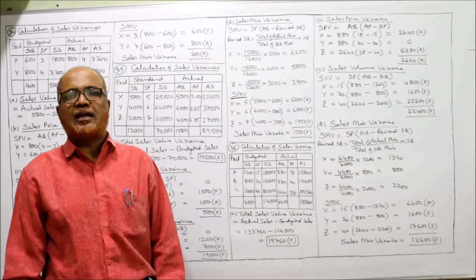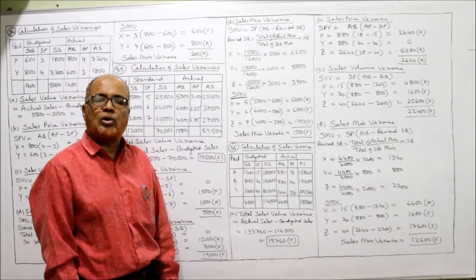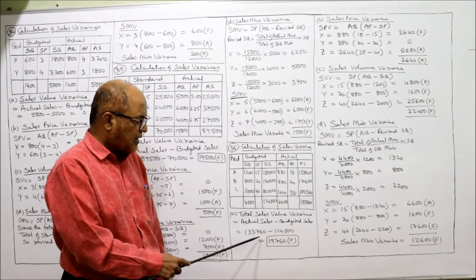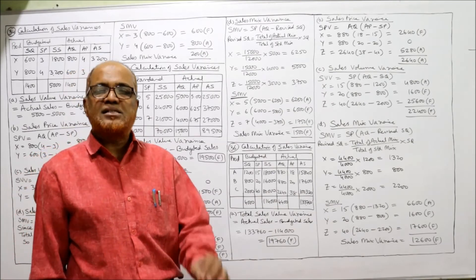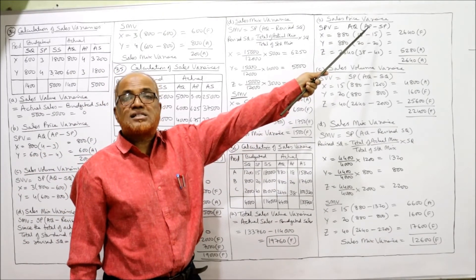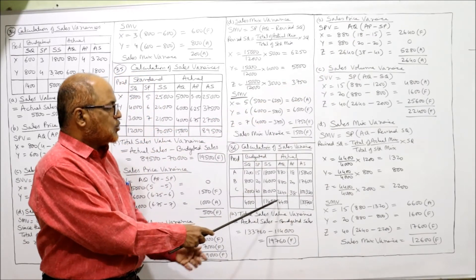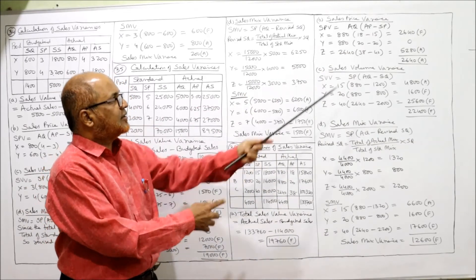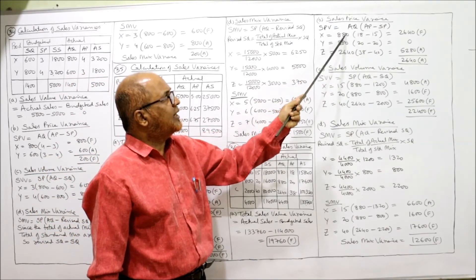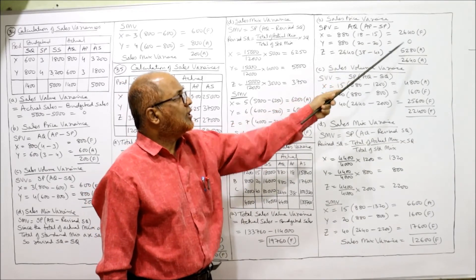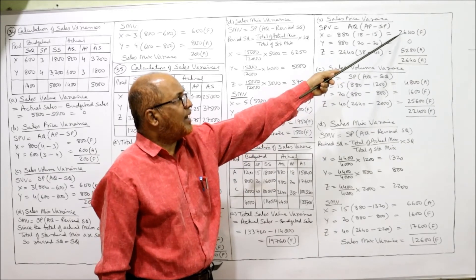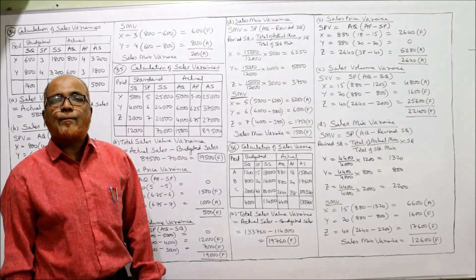First formula: sales value variance equals actual total sales minus total budgeted sales. 1,33,760 minus 1,14,000 equals 19,760 favorable — that is the total sales value variance. Sales price variance equals actual quantity into (actual price minus standard selling price). Actual quantities: 880, 880, 2,640. Actual prices: 18, 20, 38. Standard prices: 15, 20, 40. For A: 18 minus 15 into 880 equals 2,640 favorable. For B: 20 minus 20 into 880 equals 0. For C: 38 minus 40 into 2,640 equals 5,280 adverse. Set off: 5,280 adverse minus 2,640 favorable equals 2,640 adverse — that is the sales price variance.